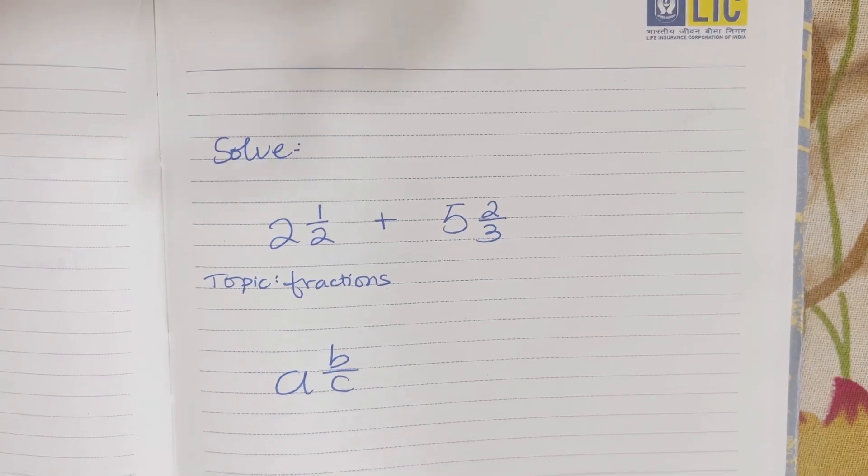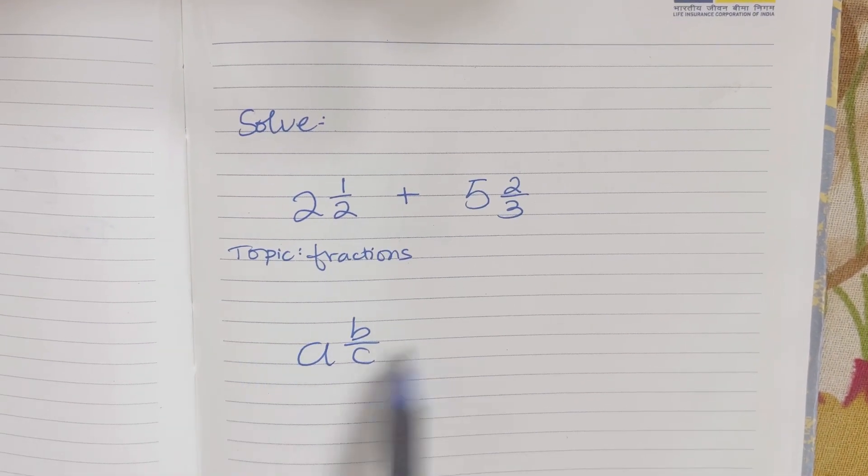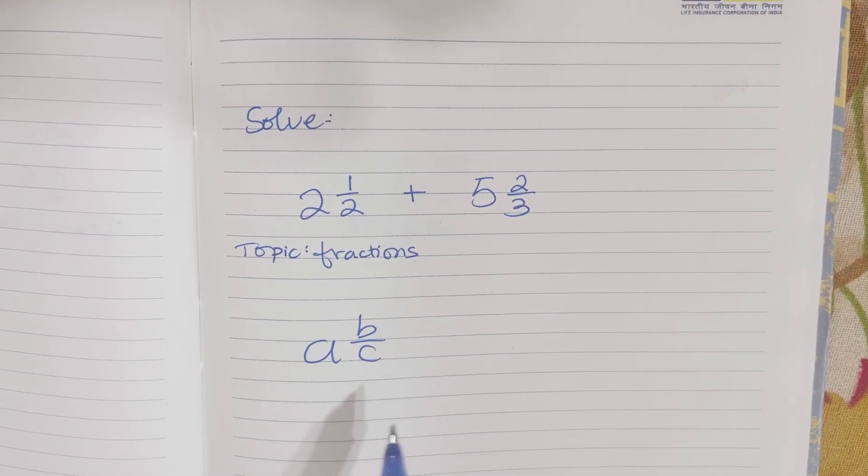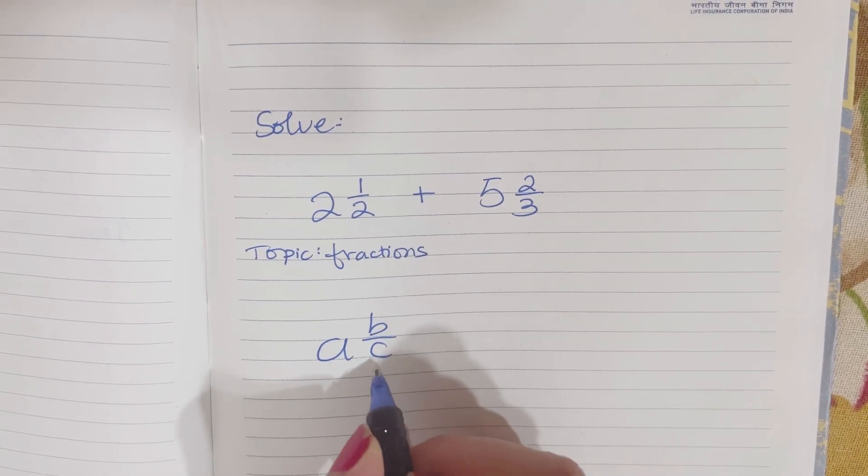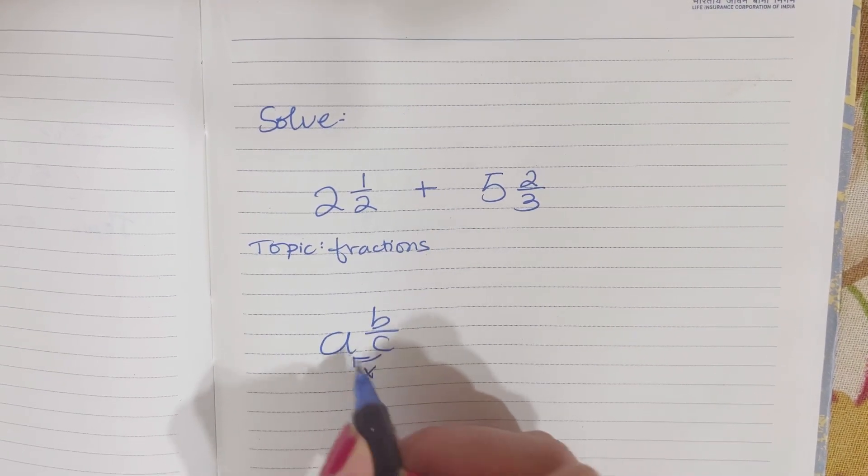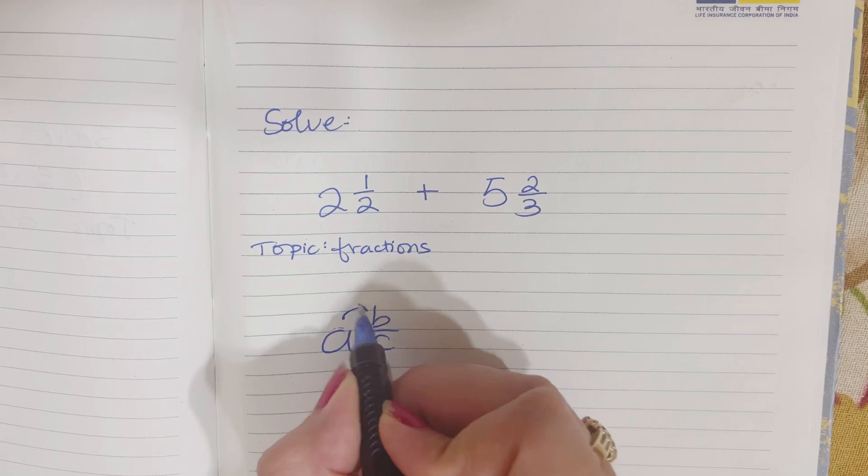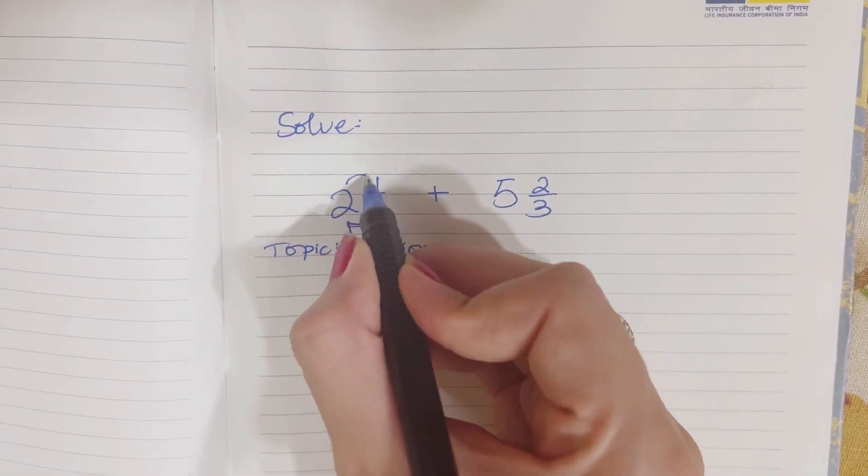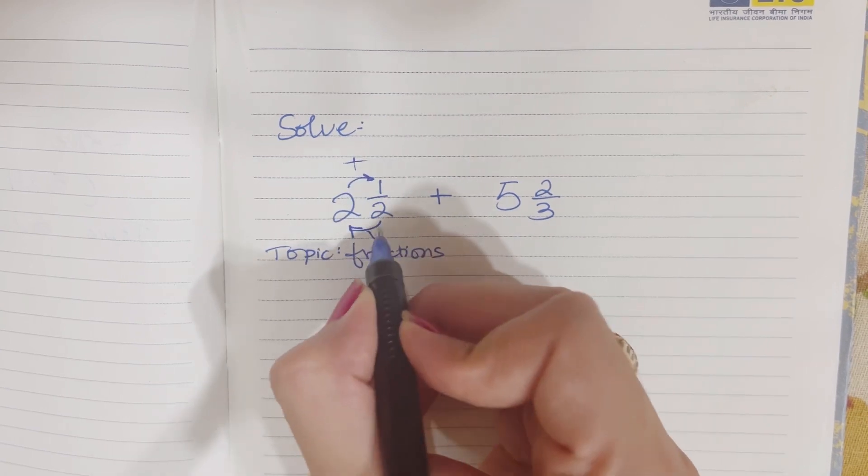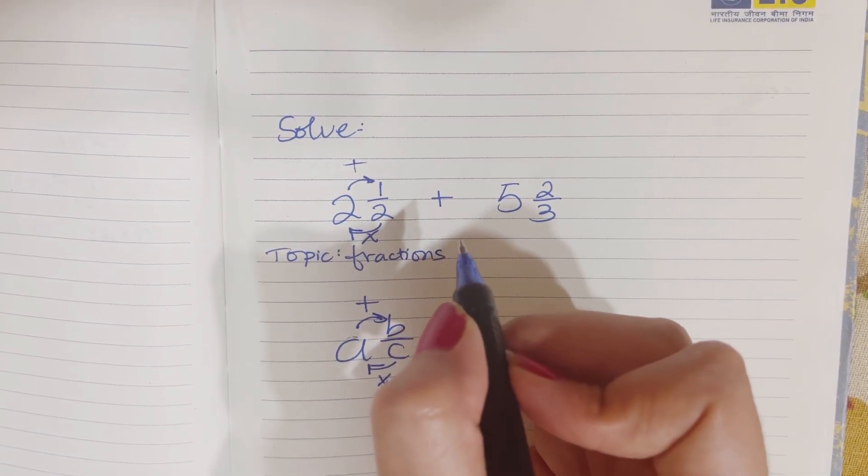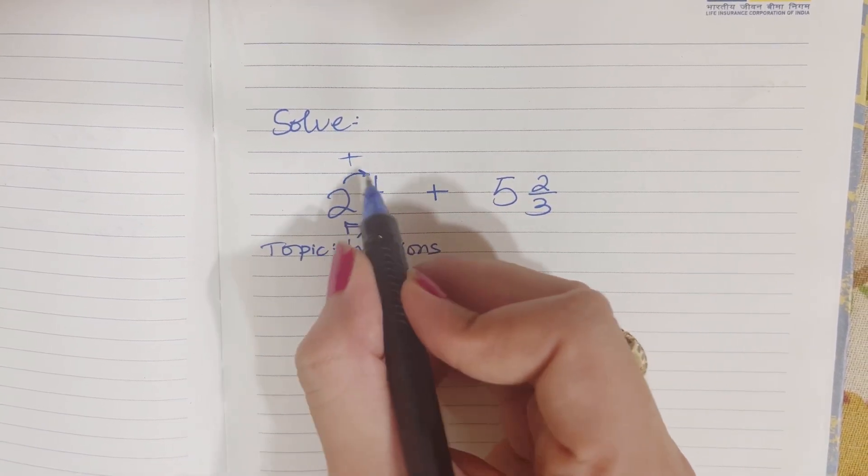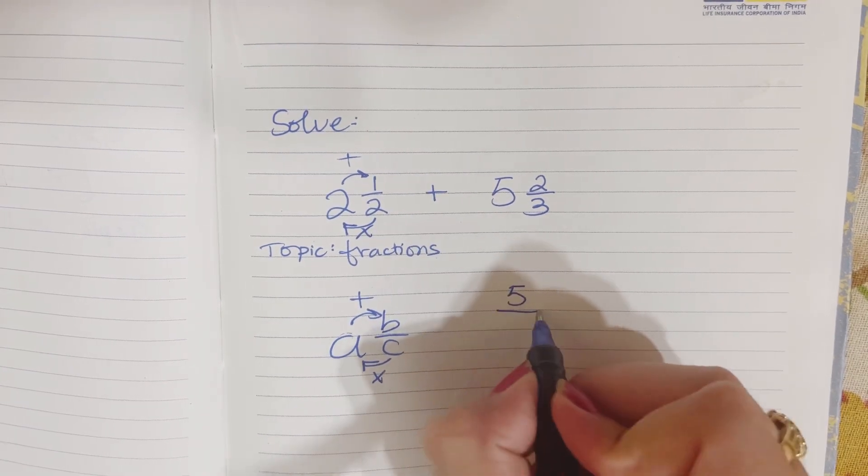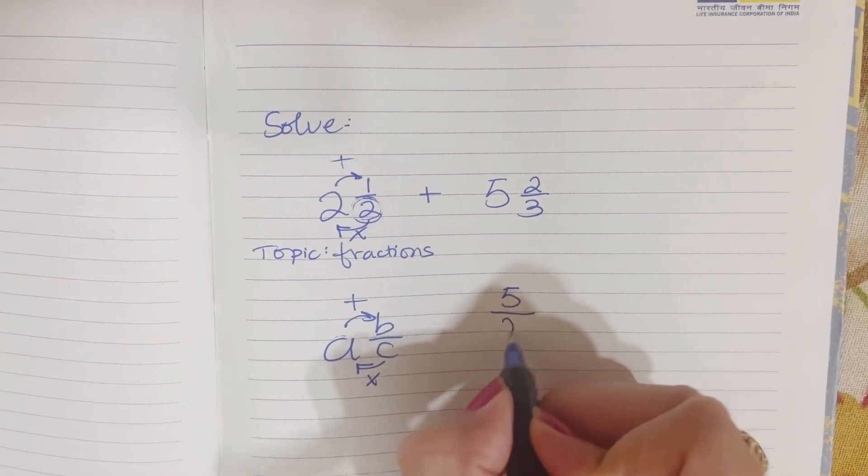The next question is about fractions, mixed fractions right here. To solve this problem, you take the denominator and multiply it by the bigger number, and then you add it. So 2 multiplied by 2 is 4 plus 1 equals 5.